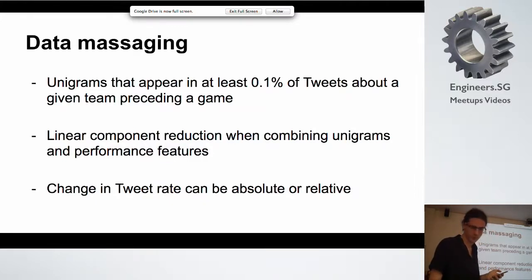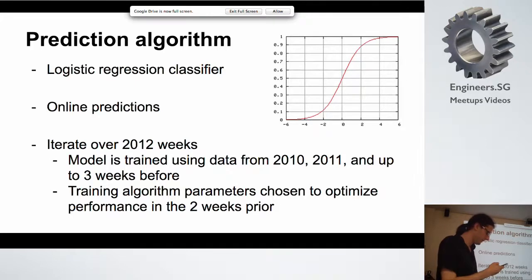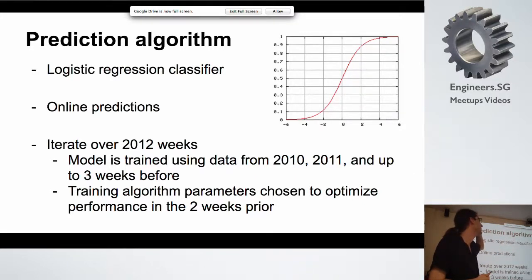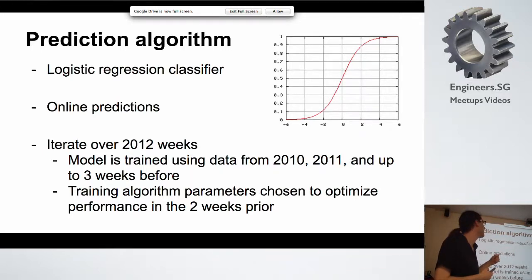The algorithm they use to make predictions is a logistic regression classifier. Basically, that's what a logistic function looks like — for every variable, it's more or less simulating a threshold function. What the model training algorithm does is associate a weight with each variable and a threshold. Then, if the value of the variable for a given game is above the threshold, you add that weight to your estimate of the outcome. It's a little more smooth than a hard threshold, but that's basically what it's about.